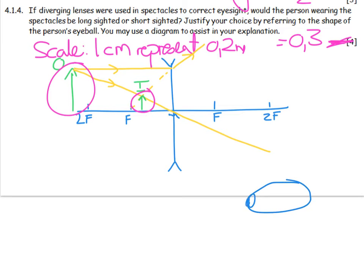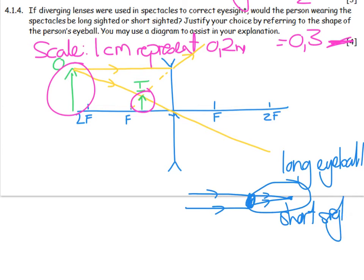Here is my long eyeball. That is what would normally happen. In come the light rays, and they meet before the retina. And I need to say something along the lines of, this person has a long eyeball and is short-sighted.